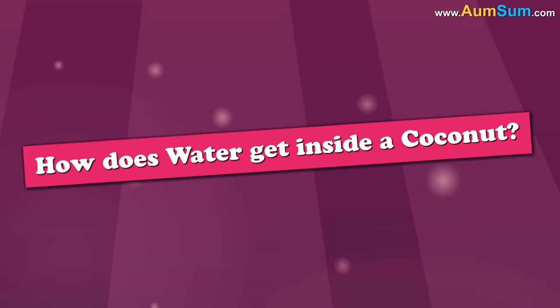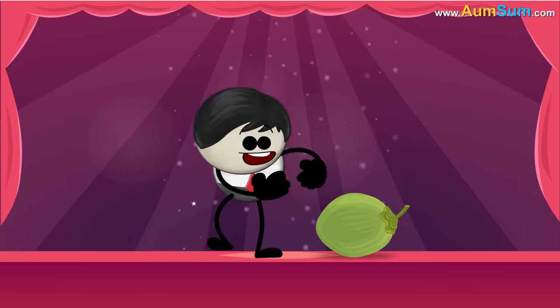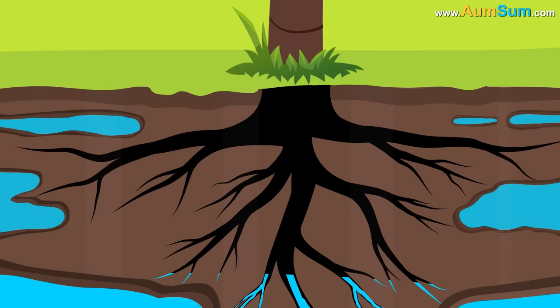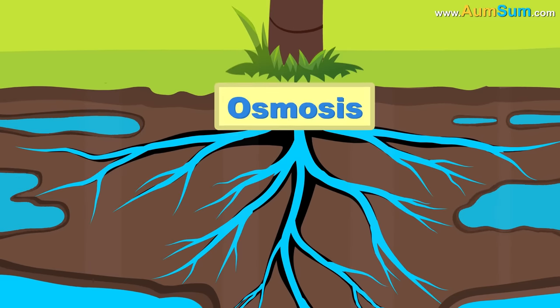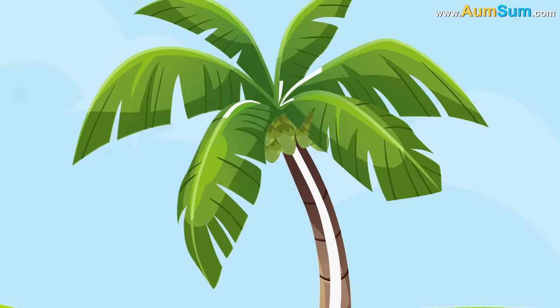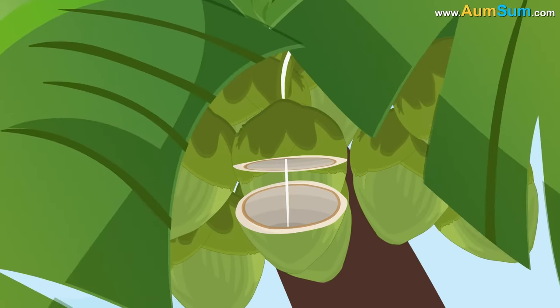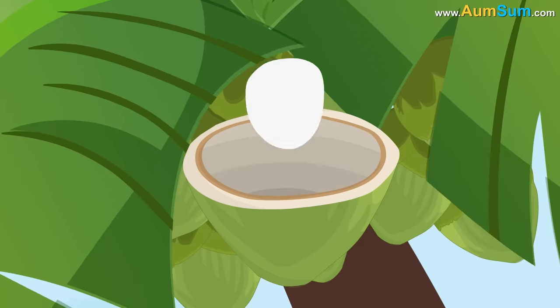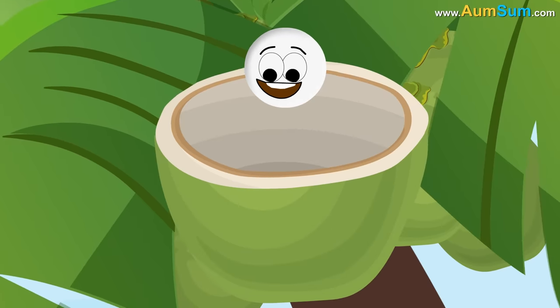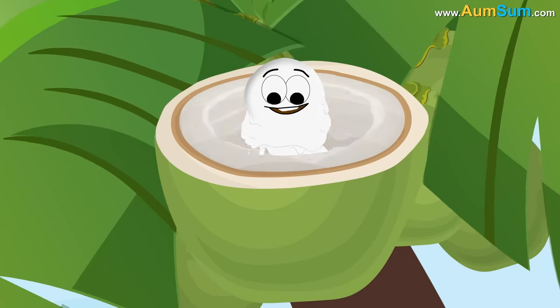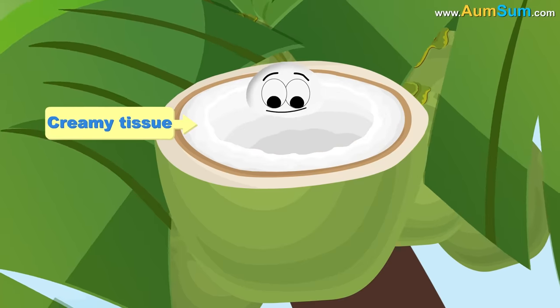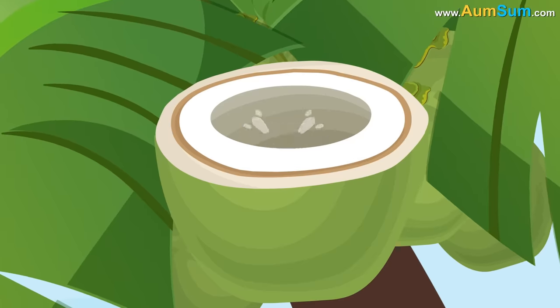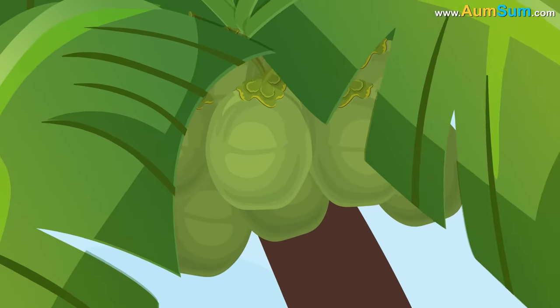How does water get inside a coconut? Simple. I put it inside using magic. Oh, AumSum. Firstly, roots of the coconut plant absorb water from the soil by a process called osmosis. This water is then transported to different parts of the coconut plant. Some of it reaches the coconut. The liquid which eventually reaches the coconut is referred to as the endosperm. This endosperm acts as the food or nourishment for the coconut's growth. Now, a part of the endosperm gets converted into a creamy tissue and gets deposited on the coconut's inner surface. Over a period of time, this creamy tissue turns hard and the remaining endosperm ends up as coconut water. So, this is how water ends up inside a coconut.